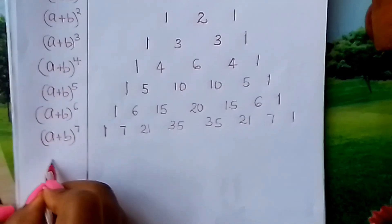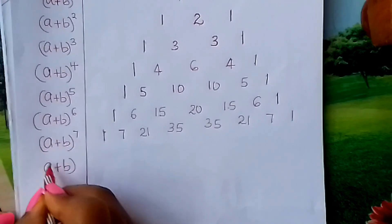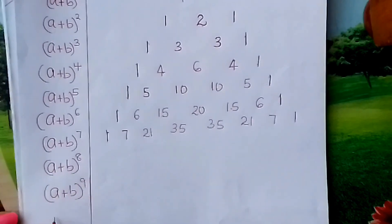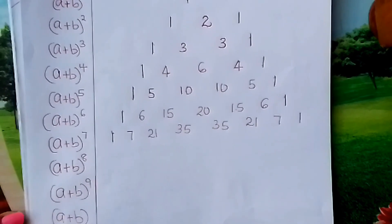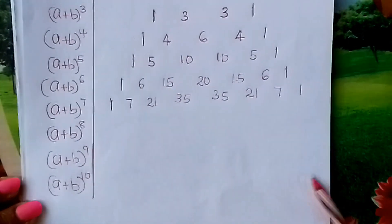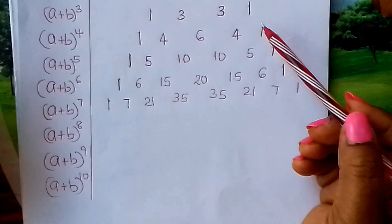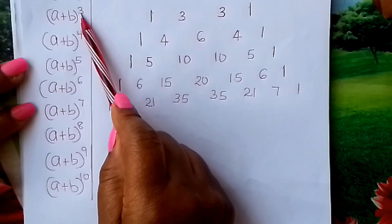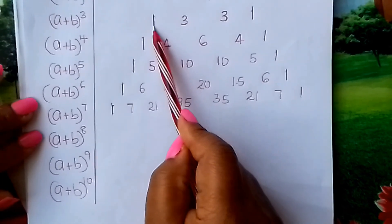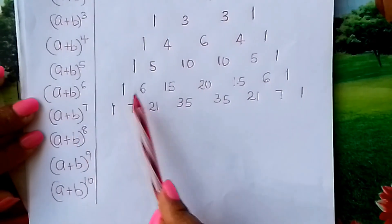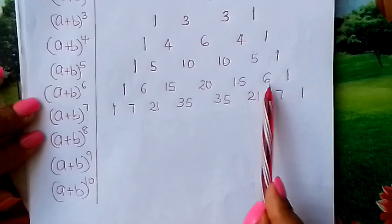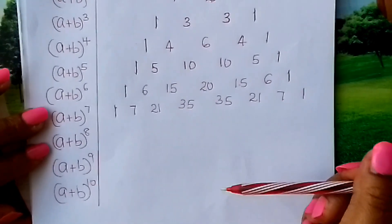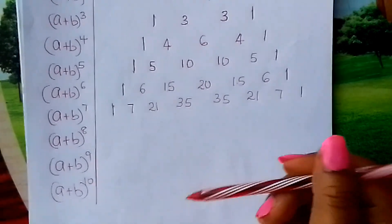So, learners, you can now go and derive the coefficients when the power is 8, the coefficients when the power is 9, and the coefficients when the power is 10 — coming up with a big triangle of coefficients called Pascal's triangle. When the power of the binomial is 3, the coefficients are 1, 3, 3, 1. When it is 6: 1, 6, 15, 20, 15, 6, 1. So if you don't have a mathematical table, you can always make yours very, very fast. Go and practice, learners. Thank you.